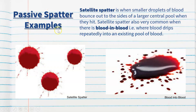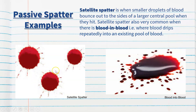Another form of passive spatter is satellite spatter, where smaller droplets of blood bounce out to the sides of a larger central pool when they hit. Satellite spatter is also very common in blood-into-blood situations, where blood drips repeatedly into an existing pool. As we can see here, there is a main droplet with smaller droplets around the central circle — that's the satellite effect.